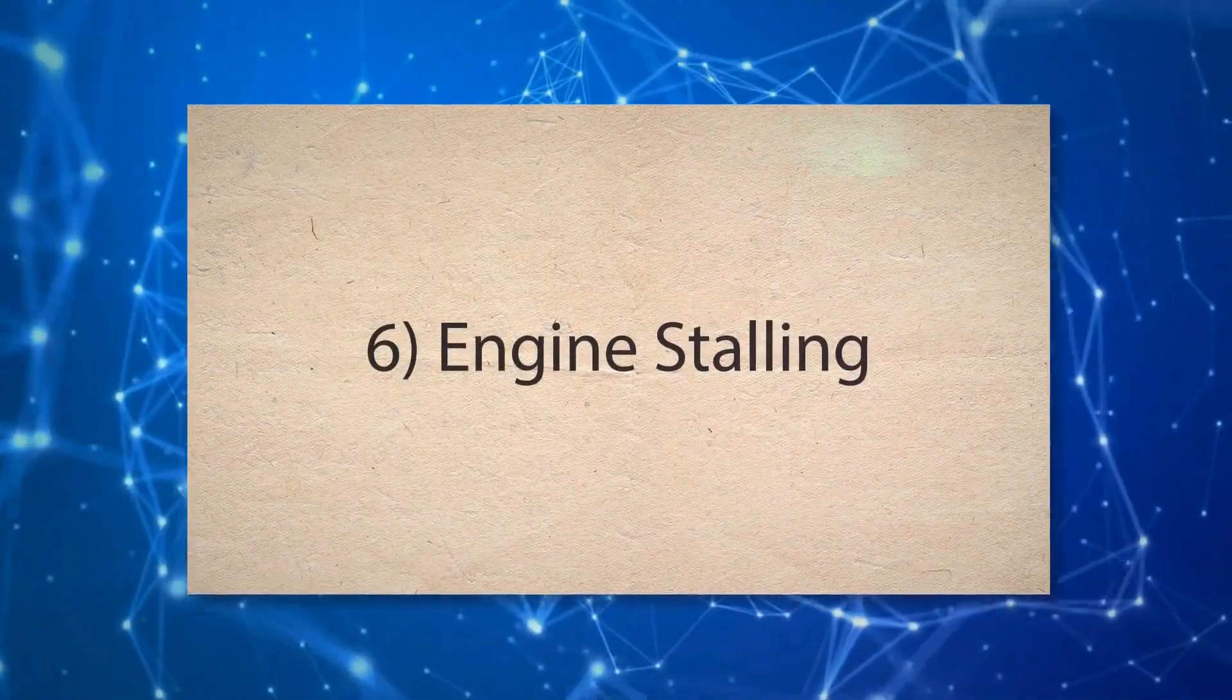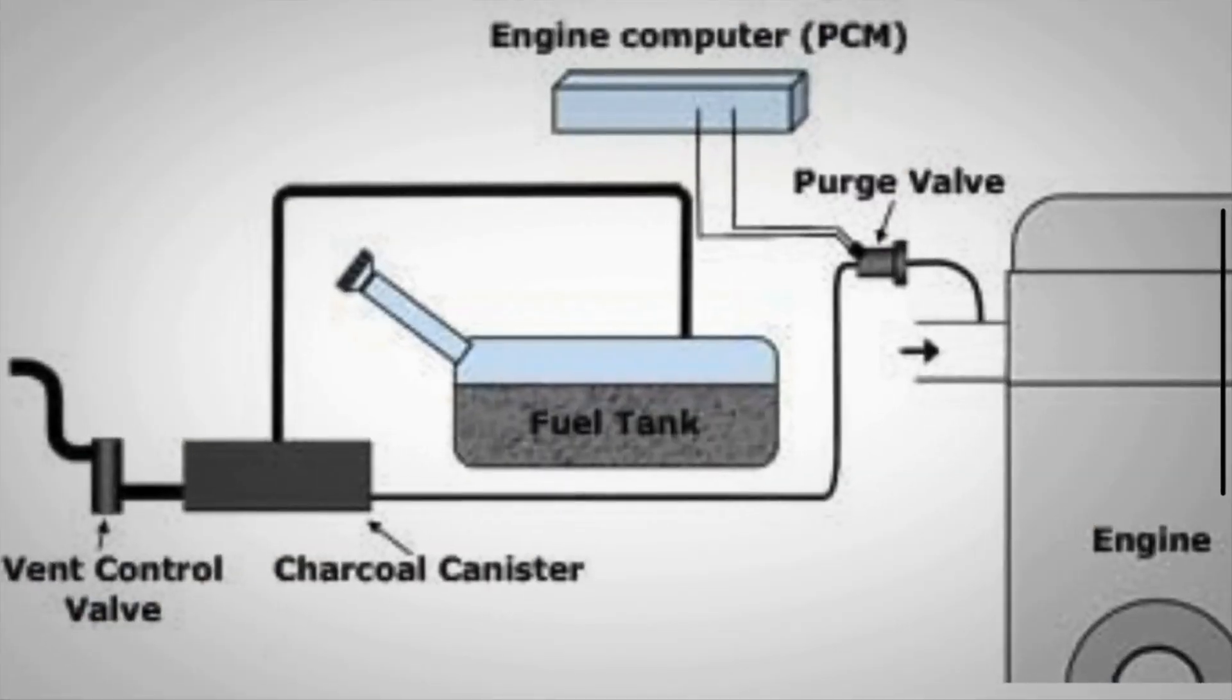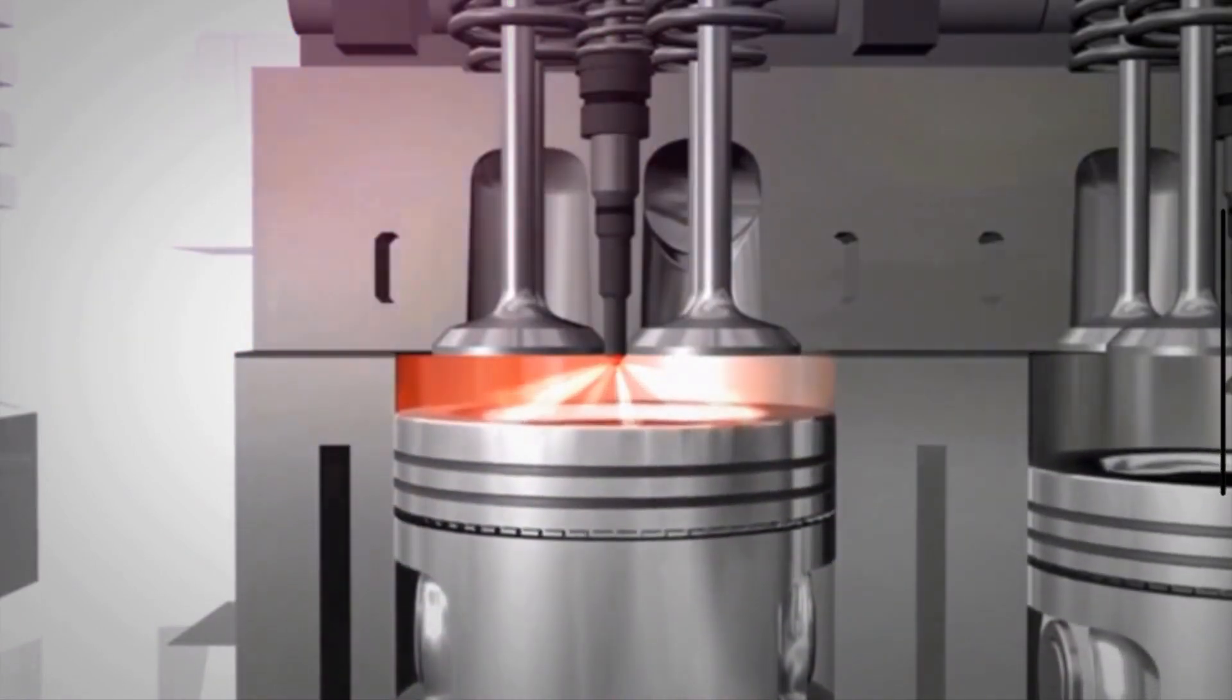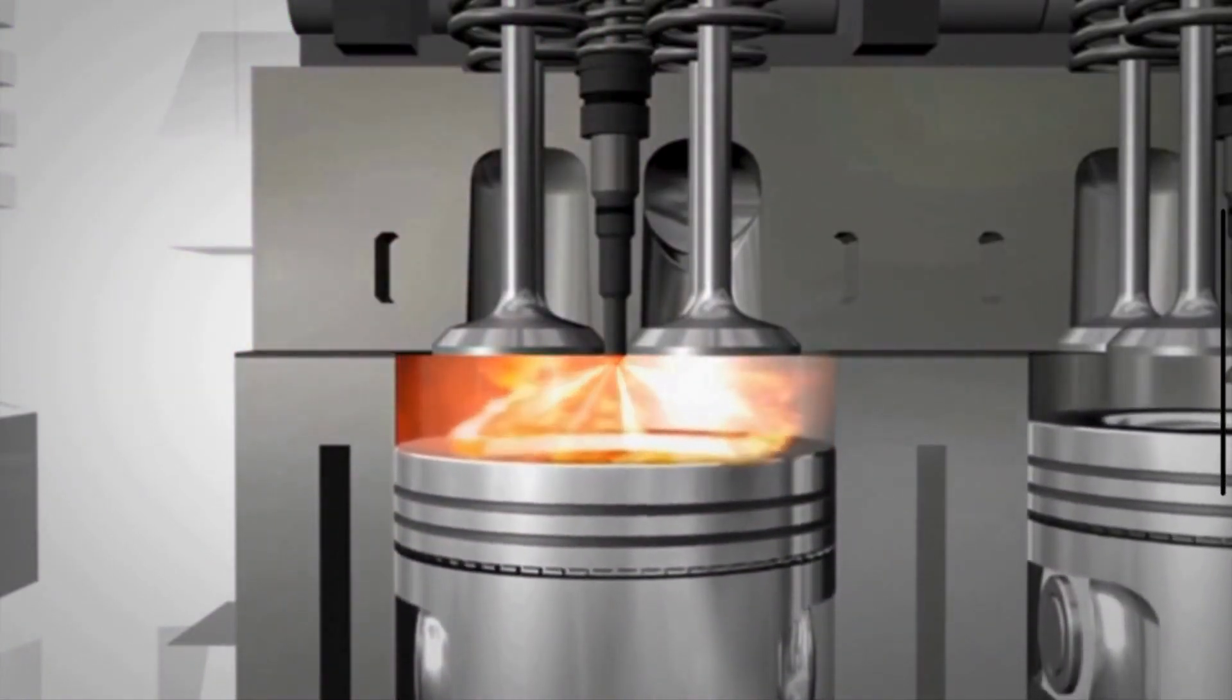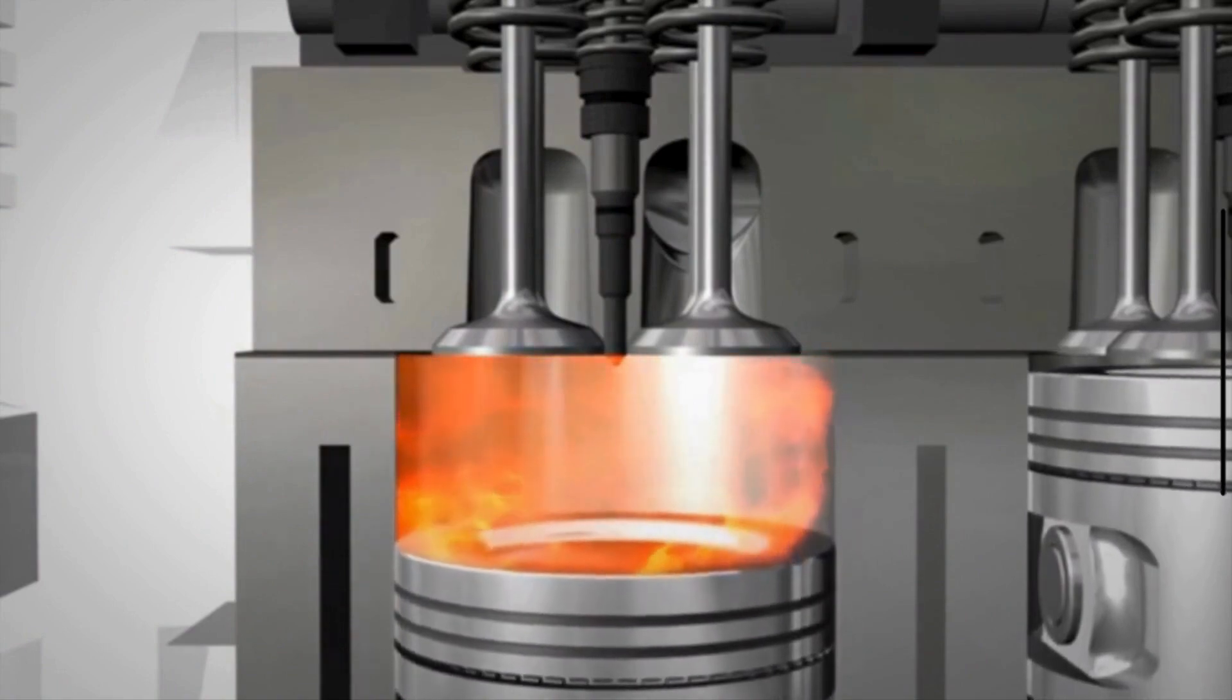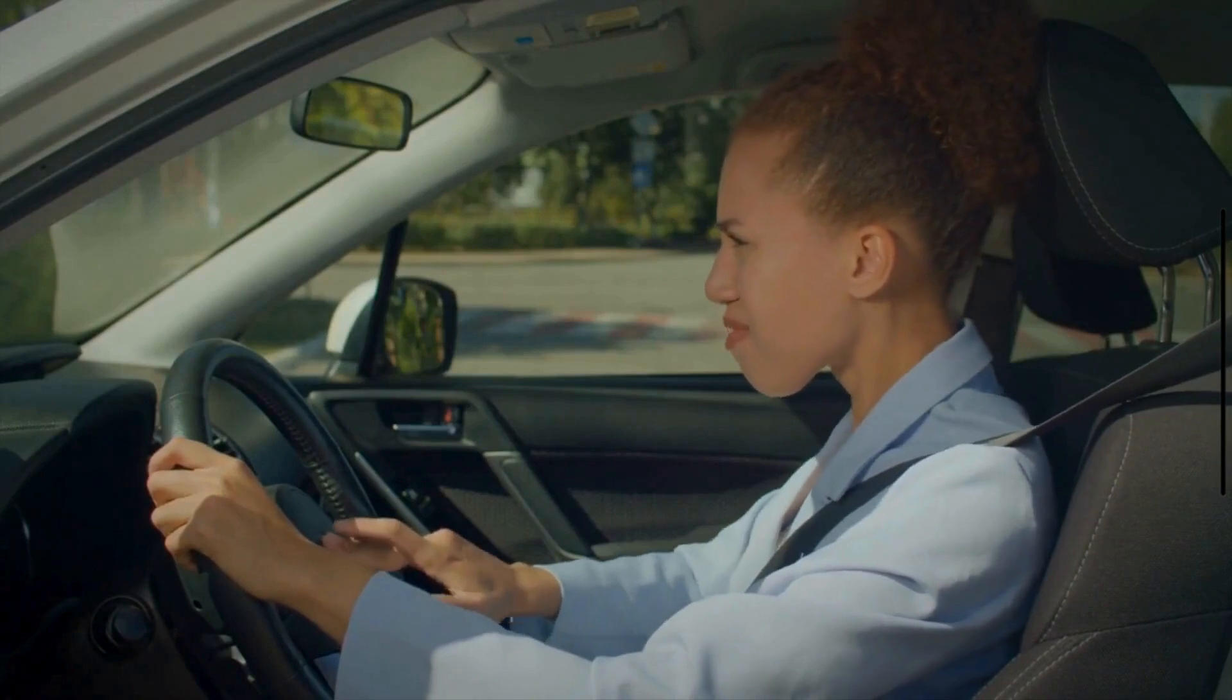6. Engine stalling. Similar to rough idle, if the purge valve is stuck open, it can allow excess air into the intake manifold. This can cause the engine to run lean, leading to stalling, particularly at idle or low speeds when the engine's demand for fuel is low.